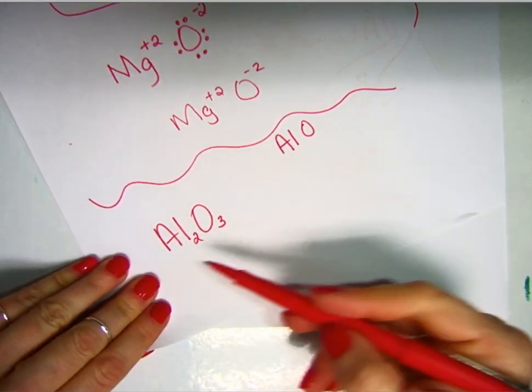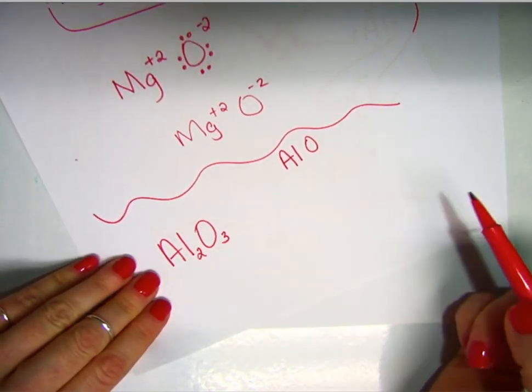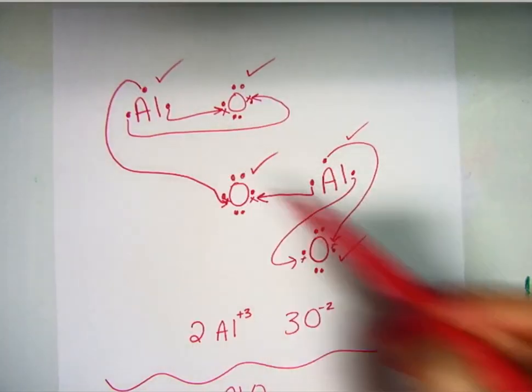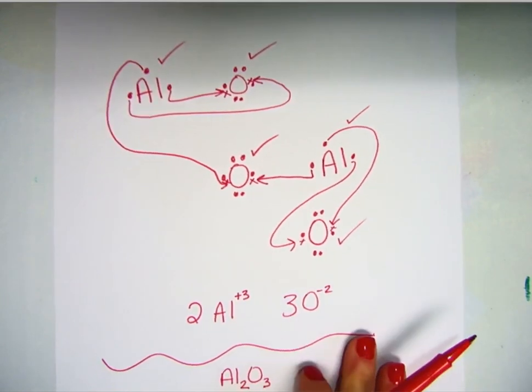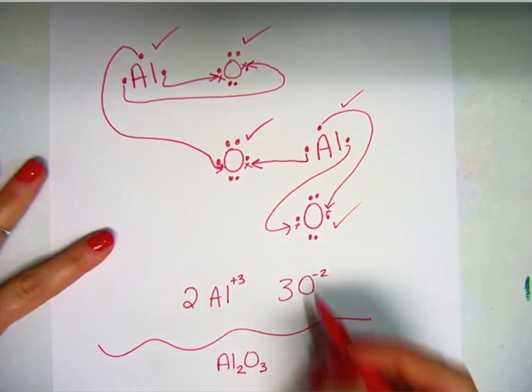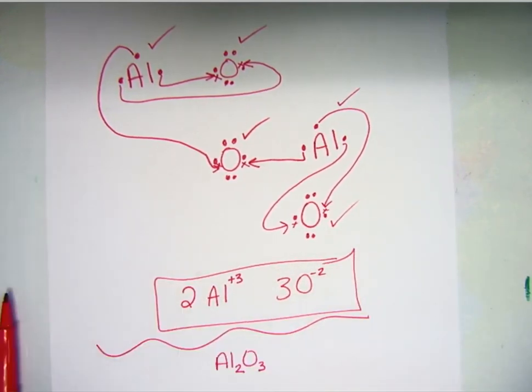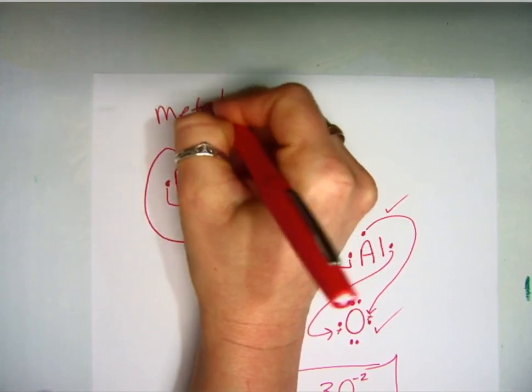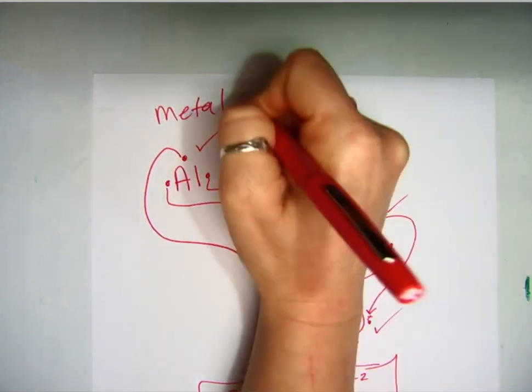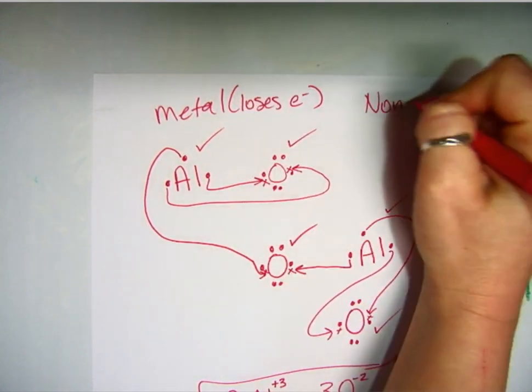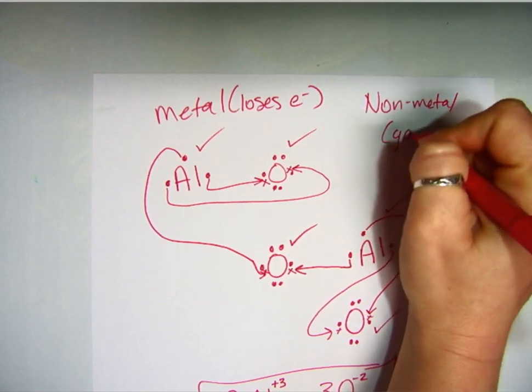I just knew that based off of—I already know their charges, and then the process to get those Lewis structures drawn and transferring of electrons led me to that conclusion as well. So whenever you're transferring electrons, you're going to have a metal that loses electrons and a non-metal that gains electrons.